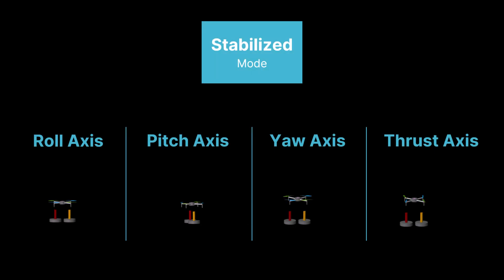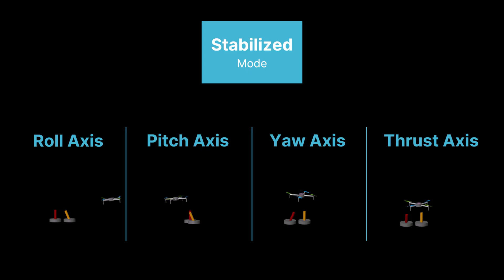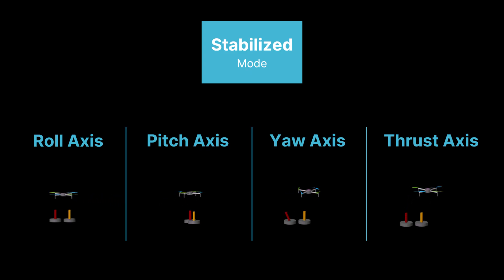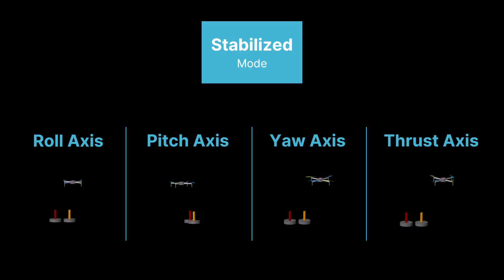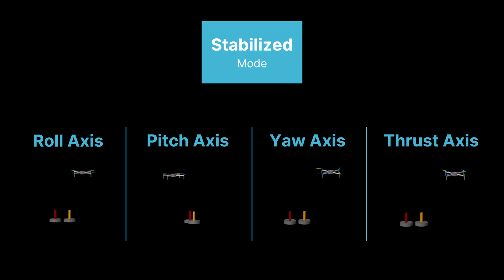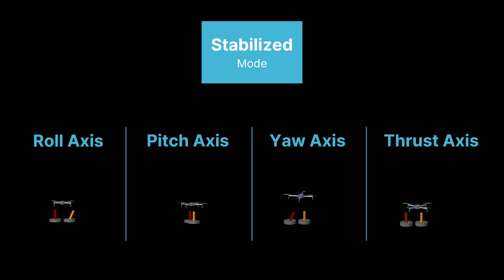Let's return to the functional requirements of the stabilized mode. Stabilized mode, also known as manual mode, the autopilot assists the pilot by stabilizing the aircraft, but the pilot is responsible for controlling the throttle, pitch, roll, and yaw. If the sticks are released, the quadcopter levels itself, but does not hold altitude or position. This mode is useful for manual flying with basic stabilization.